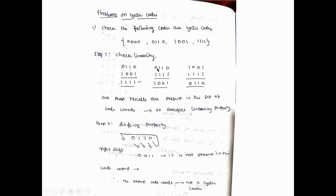Next, we take 0110 and add it with 1111. The result is 1001, which is also part of the given code set. Then we add the last two values 1001 and 1111, and again we get 0110, which is also present in the input code set. Since all additions produce outputs that are within the given set of input codes, this set of codes satisfies the linearity property.